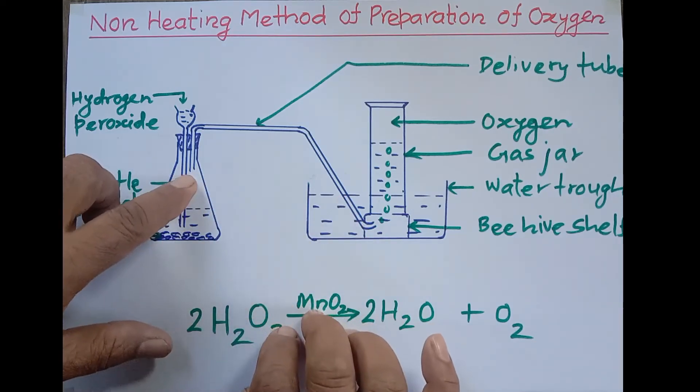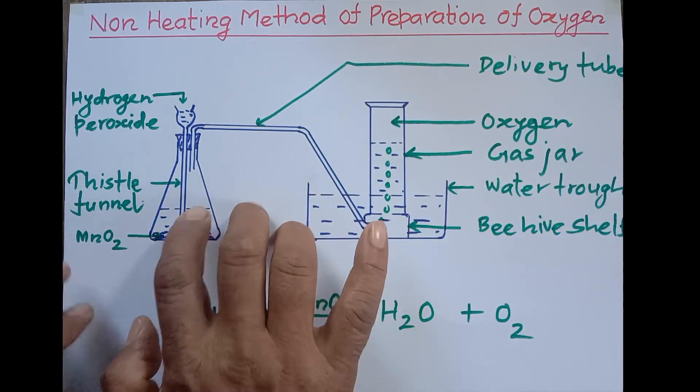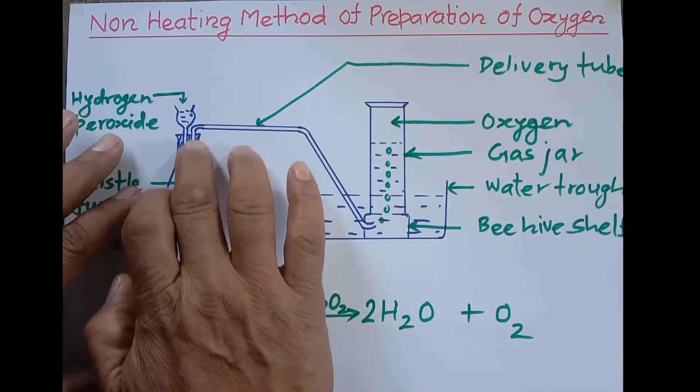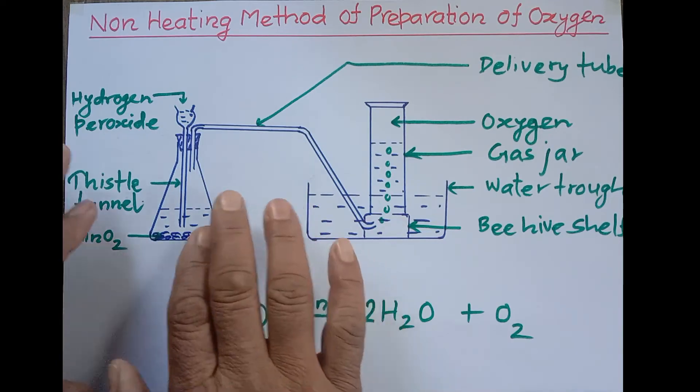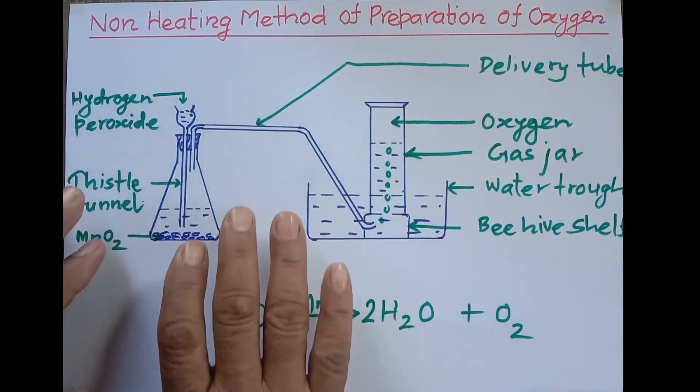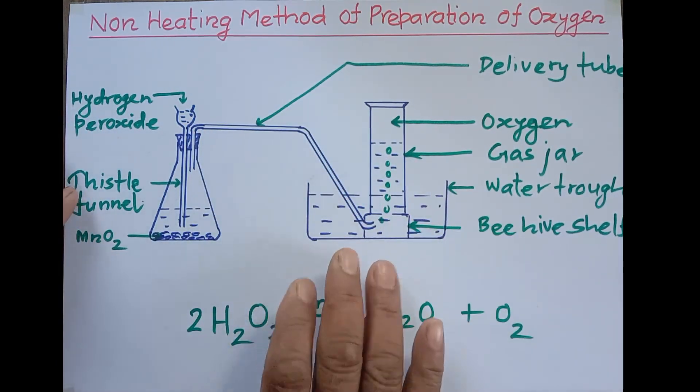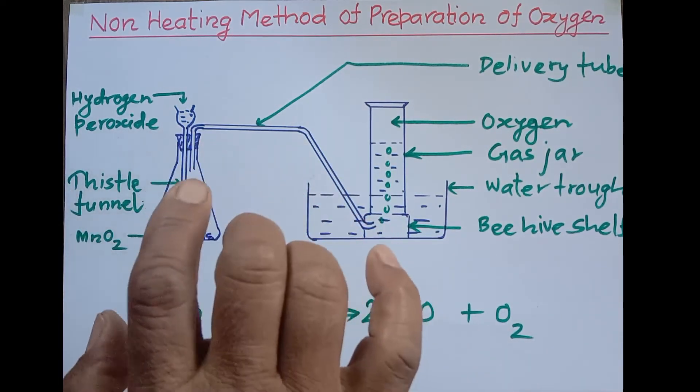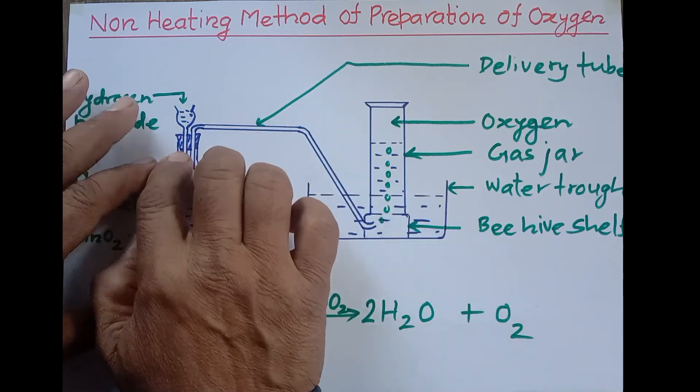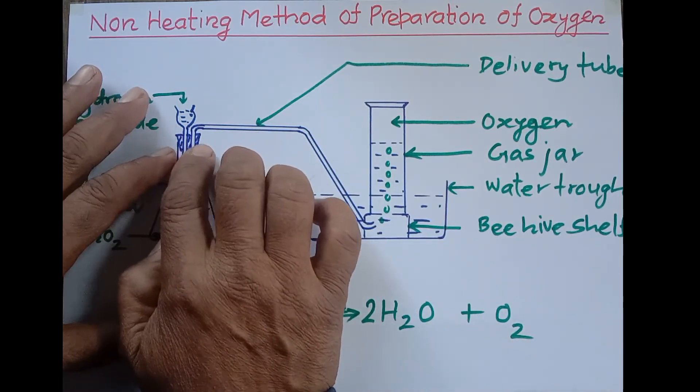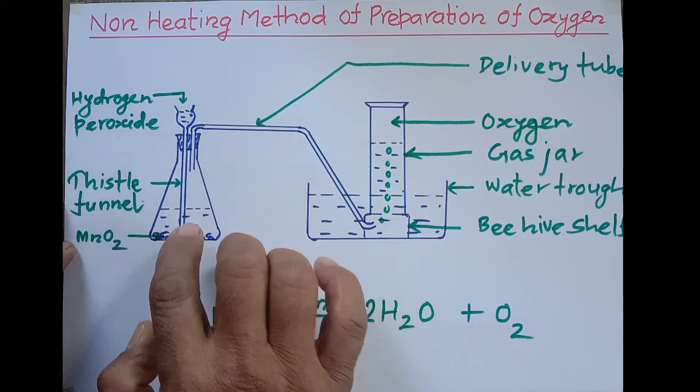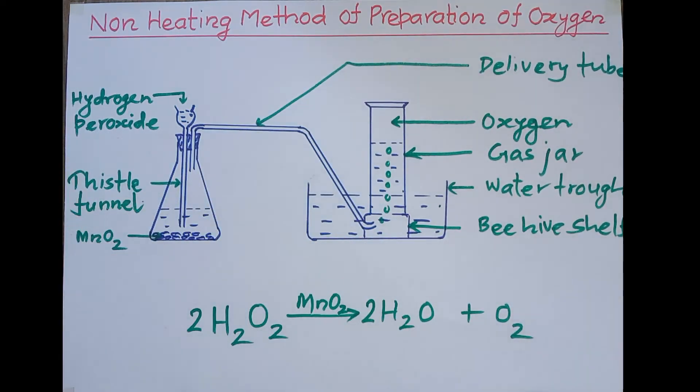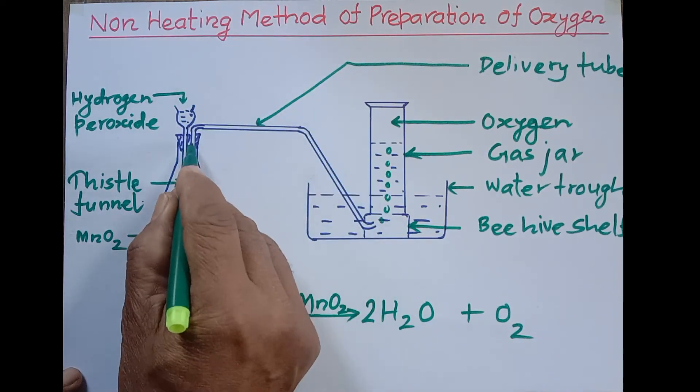Another point about this delivery tube: the tip of the delivery tube should not be deep into hydrogen peroxide, otherwise there is no way for oxygen gas to go out and that situation becomes dangerous. Also, the cork should be airtight when we fit it, otherwise the oxygen gas will go out through other gaps.